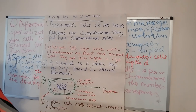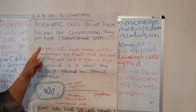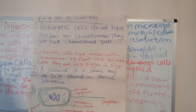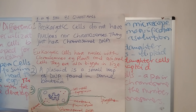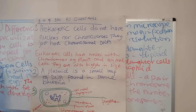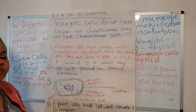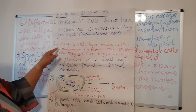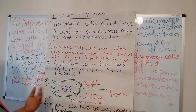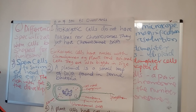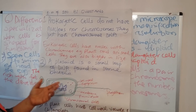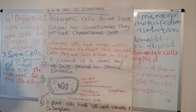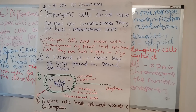Number one: prokaryotes and eukaryotes. Prokaryotic cells do not have a nucleus and they do not have chromosomes. However, they have chromosomal DNA. For example, bacterial cells are an example of a prokaryotic cell. Whereas eukaryotic cells all have a nucleus and they have chromosomes in them. Examples are plant and animal cells as we know them, and they are also bigger in size than prokaryotes.